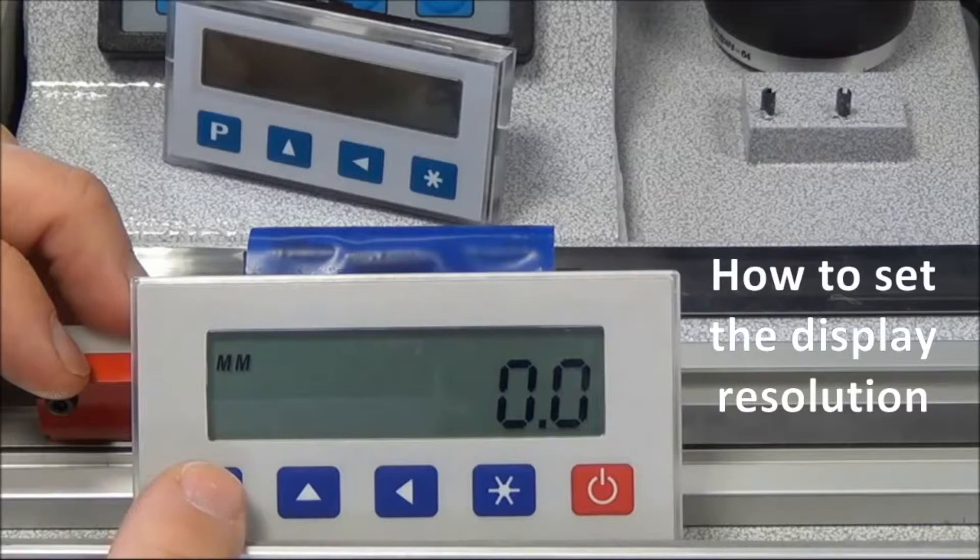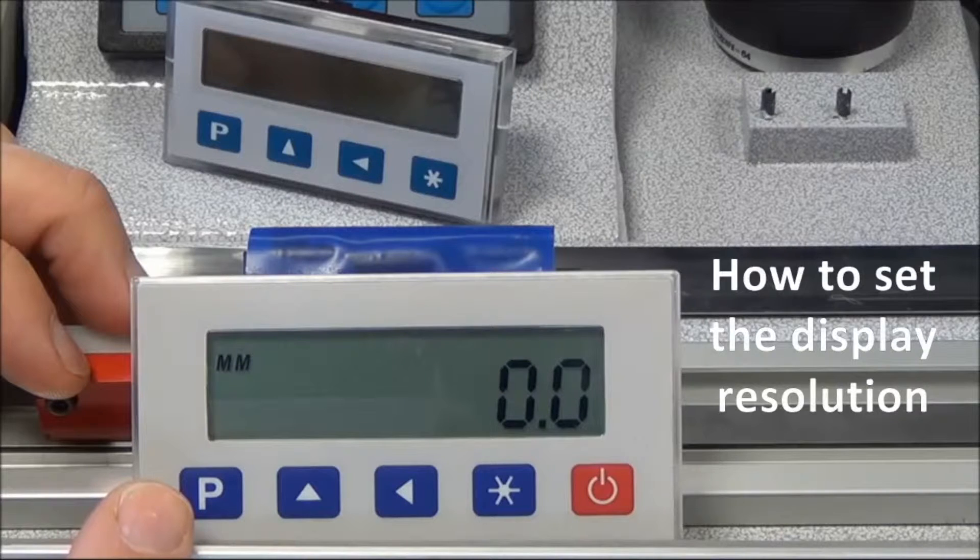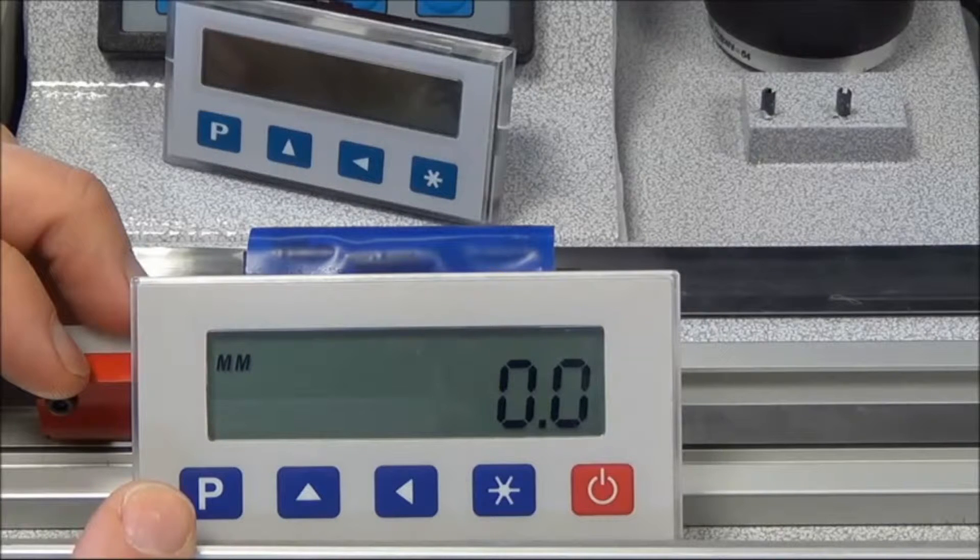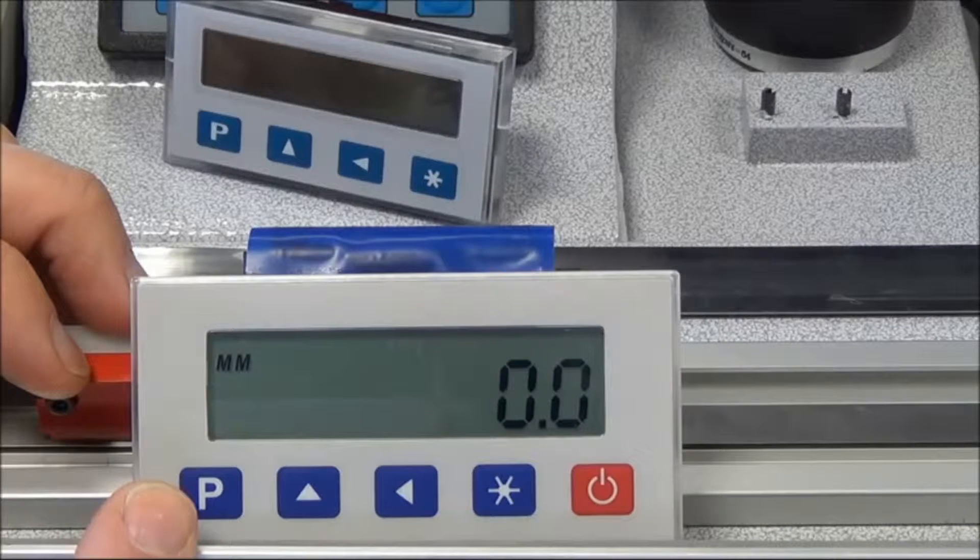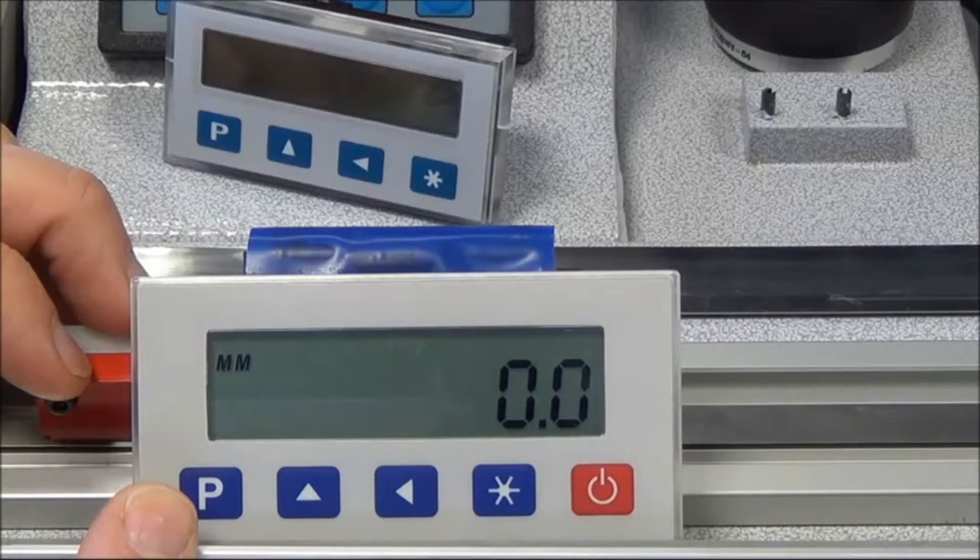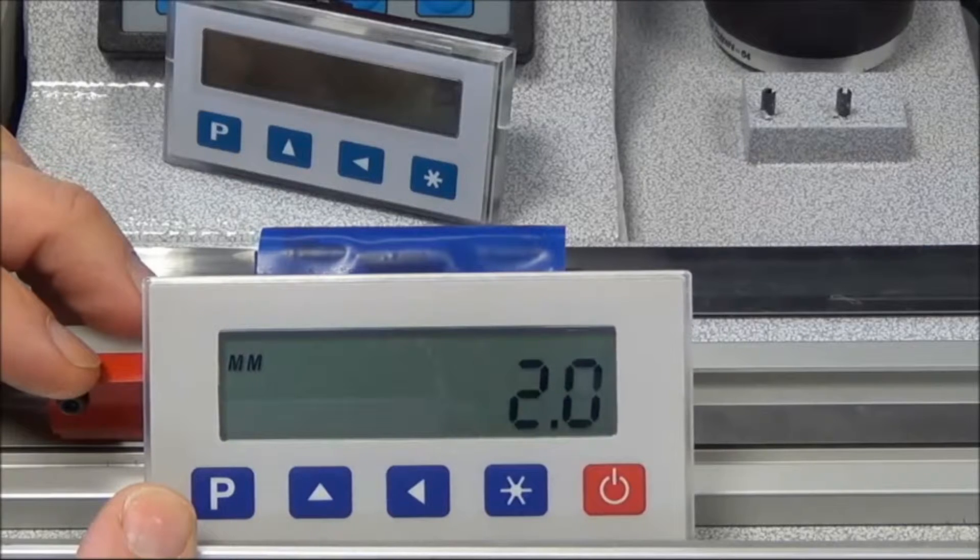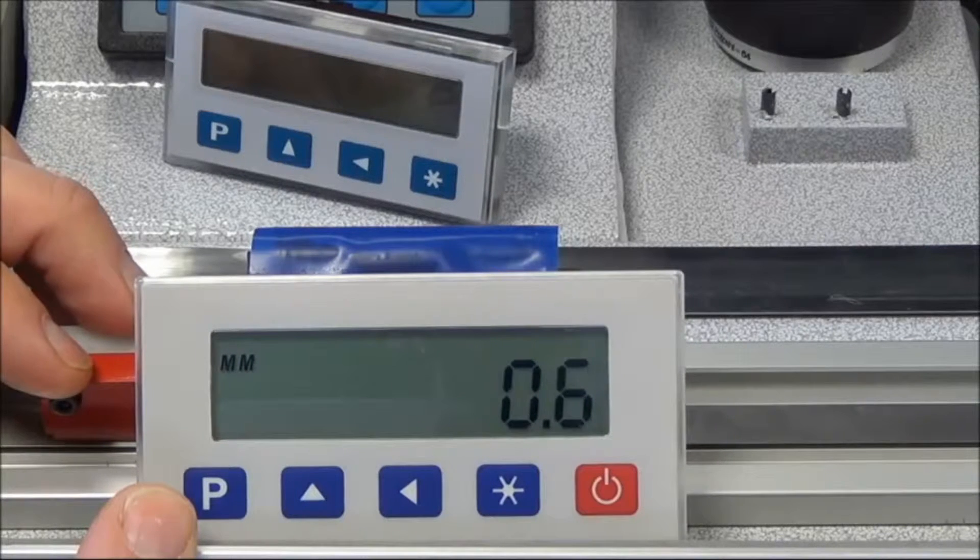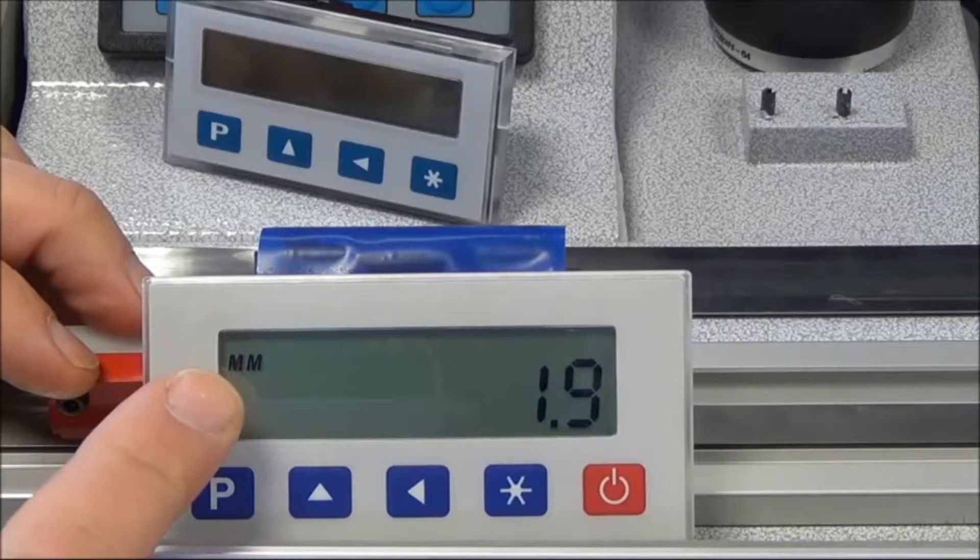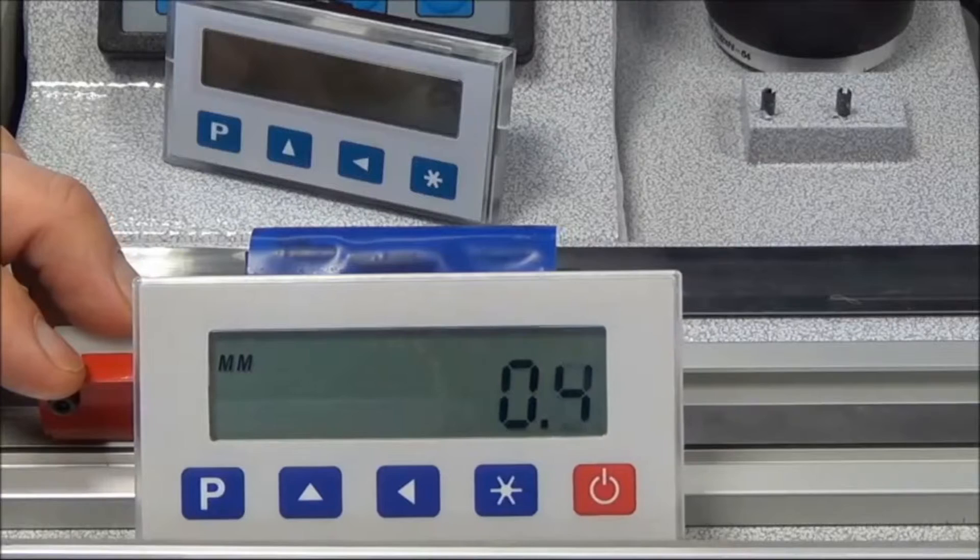What we're trying to show here is how to select the resolution of the display. We have a customer who said he'd like to display to one hundredths of a millimeter on linear travel. Here you can see that the display is defaulted to tenths of a millimeter, showing the millimeter setting with one decimal place.